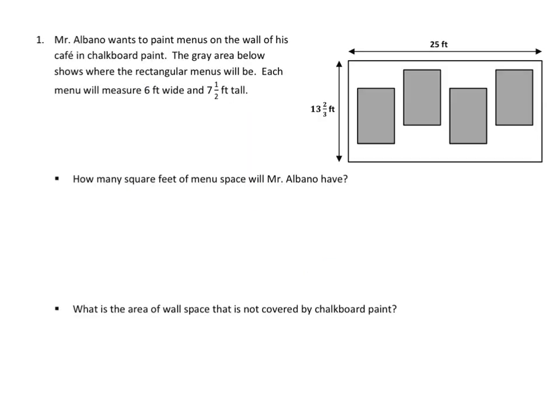All right. We have the same sort of problem here. Mr. Albano wants to paint menus on the wall of the cafe with chalkboard paint. The gray area below shows where the rectangular menus would be. Each of the menus measures 6 by 7 1⁄2 feet tall. I see an opportunity here. I could add the height of all these, right? And that would give me 7 1⁄2 plus 7 1⁄2. And 7 1⁄2 plus 7 1⁄2 is 15. And another 7 1⁄2 plus 7 1⁄2 is another 15. We have 30.